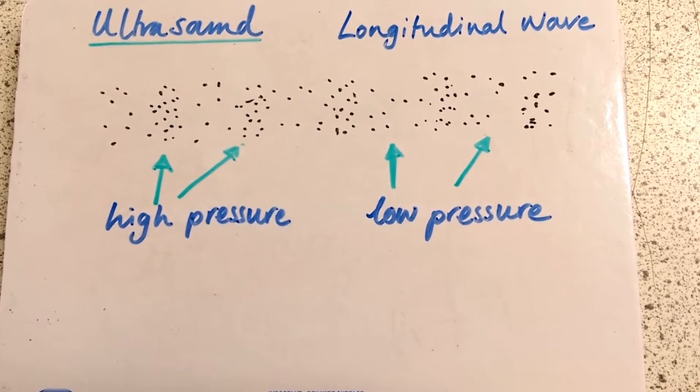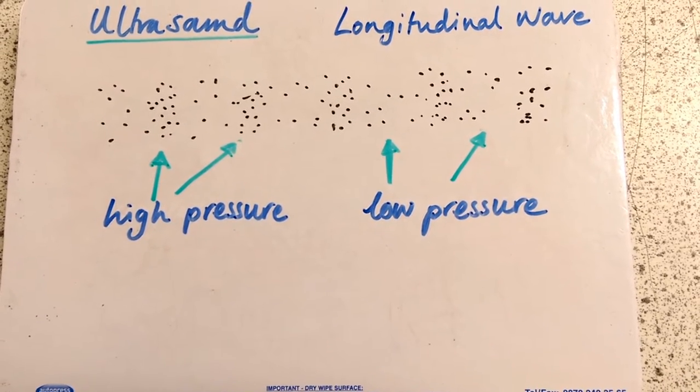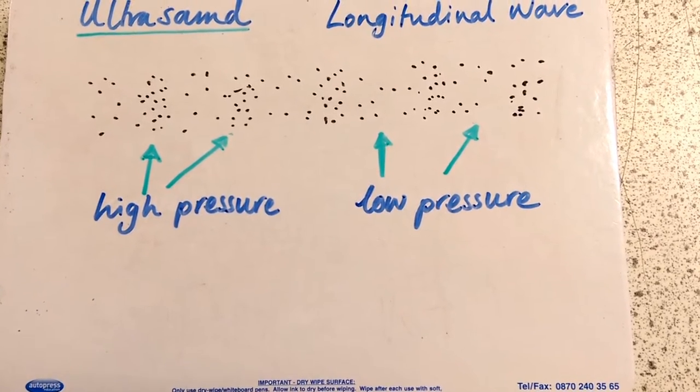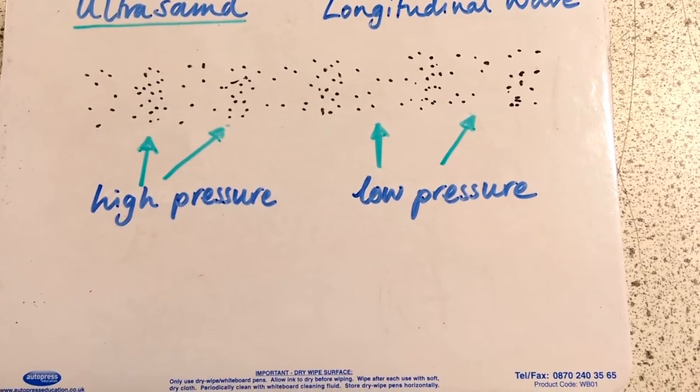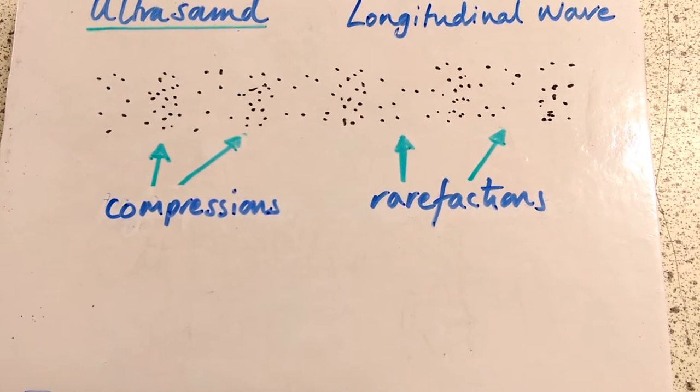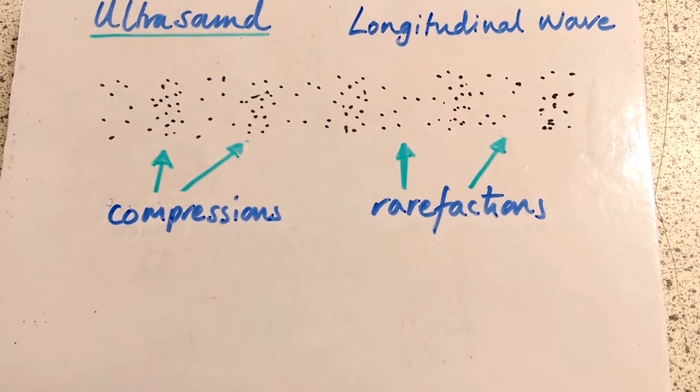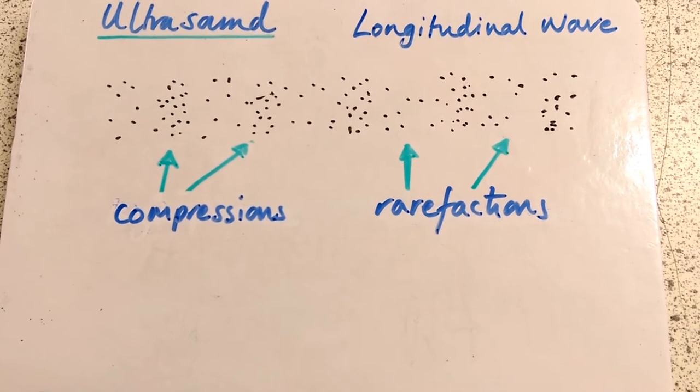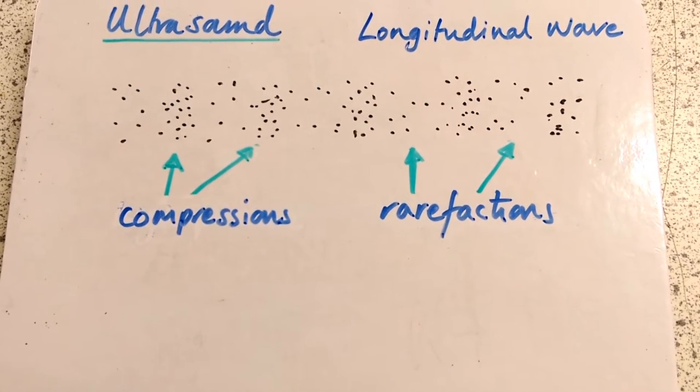There are corresponding regions of high pressure and low pressure. Regions where all the particles are bunched up closely or where they are spread out quite far apart. We call those regions compressions and rarefactions. Compressions where they are squashed together or compressed or high pressure. Rarefactions where they are stretched apart or rarefied.